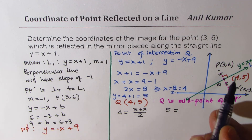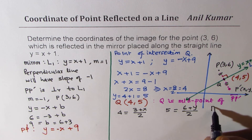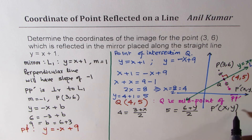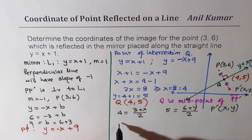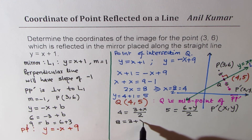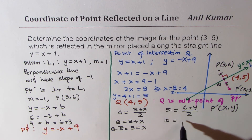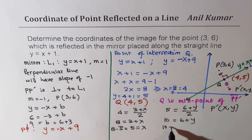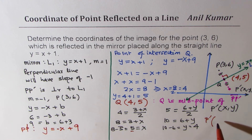So the x-coordinate of Q gives us: 4 = (3 + x) / 2, and the y-coordinate of Q gives us: 5 = (6 + y) / 2. Cross-multiplying: 8 = 3 + x, so x = 5; and 10 = 6 + y, so y = 4. Therefore, the coordinates of P' are (5, 4).